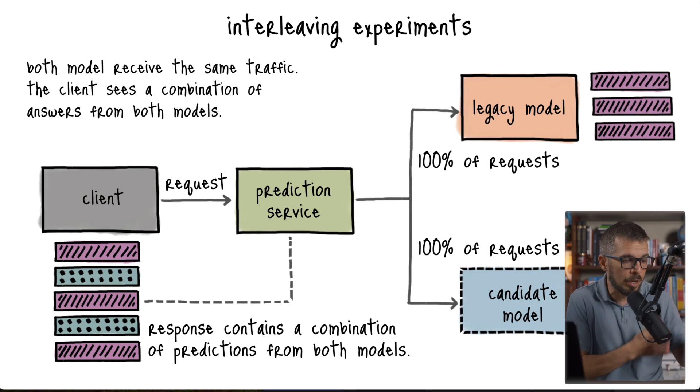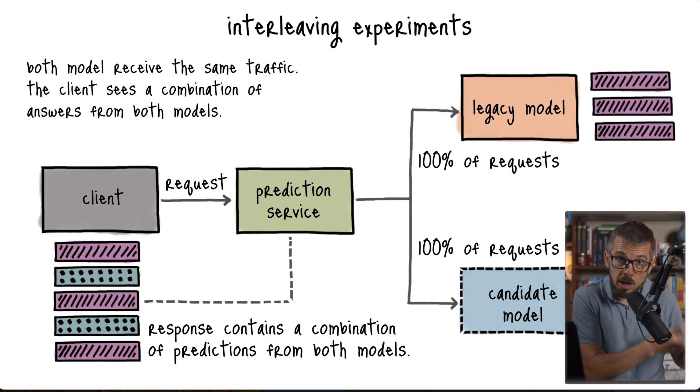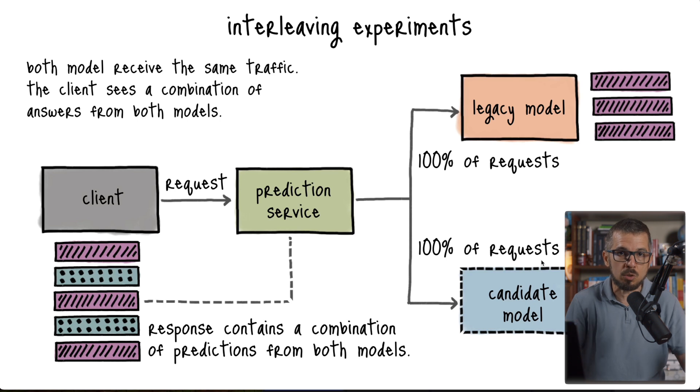The prediction service, instead of sending the request to one model, now sends the same request to two different models. I'm identifying those models as the legacy model, which is the current deployed version—some people call this the champion model—and the candidate model, which is this second model in blue with the dotted line. The candidate model is the model we want to test. Is it better than the legacy model? This is what we want to test. The prediction service sends 100% of requests to both models, asking them both to generate recommendations. Before we had a candidate model, all recommendations came from the legacy model. The legacy model generated these three pink recommendations, and we would send those back to the client.